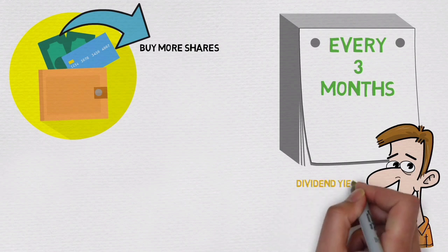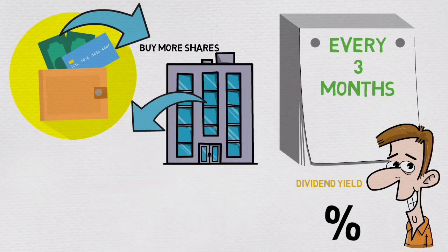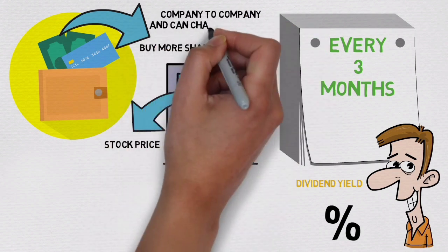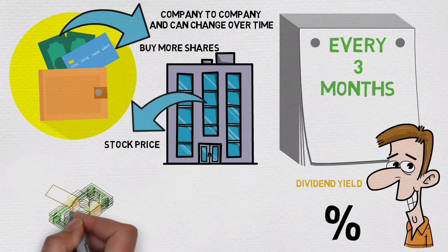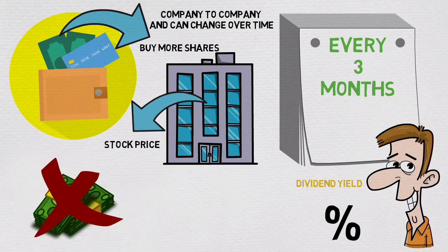Dividend yield is a metric expressed as a percentage and is financial ratio that shows how much a company pays out in dividends relative to its stock price. It varies from company to company and can change over time. Smaller companies usually can't offer as high dividend yield as the more established ones.